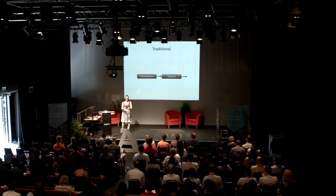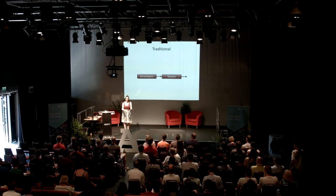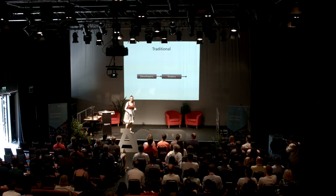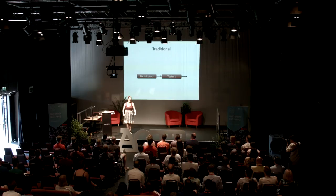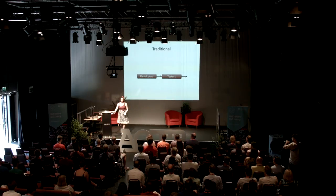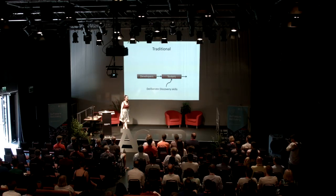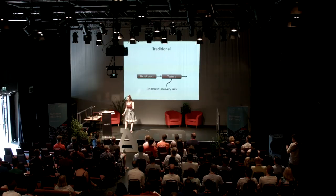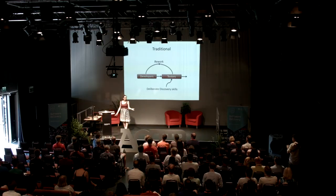Dan describes it like coming back from kindergarten with your glitter-and-pasta picture — you give it to your parents and they proudly push it up on the fridge — except you give it to a tester and they shred it into tiny pieces and give it back to you. Testers have what we call deliberate discovery skills: the skill to deliberately discover what is wrong with your code, and it results in rework bugs.